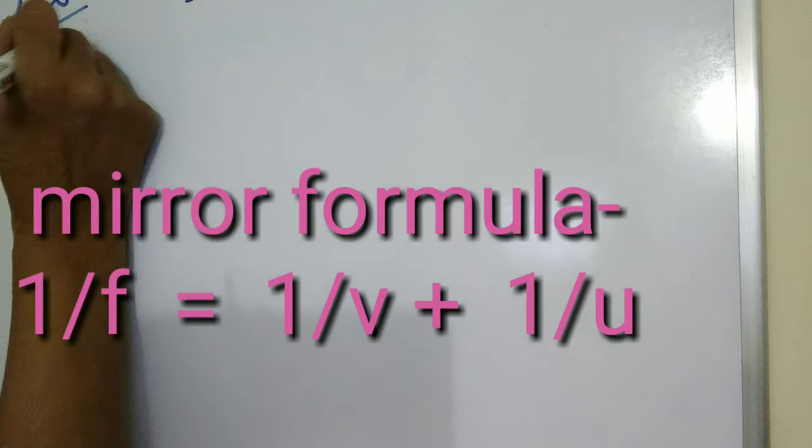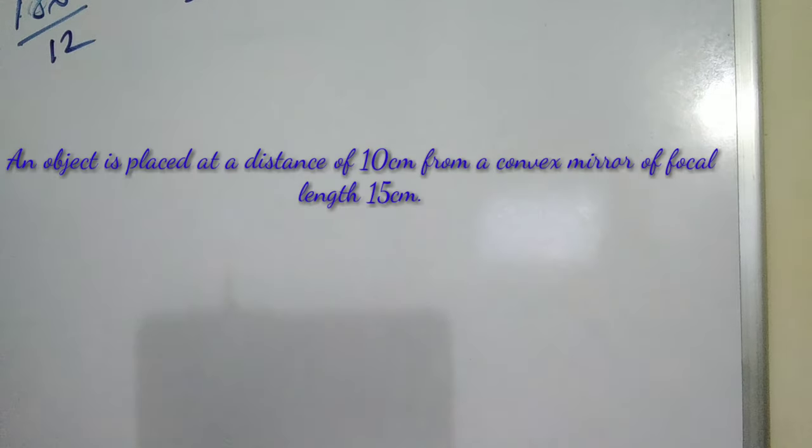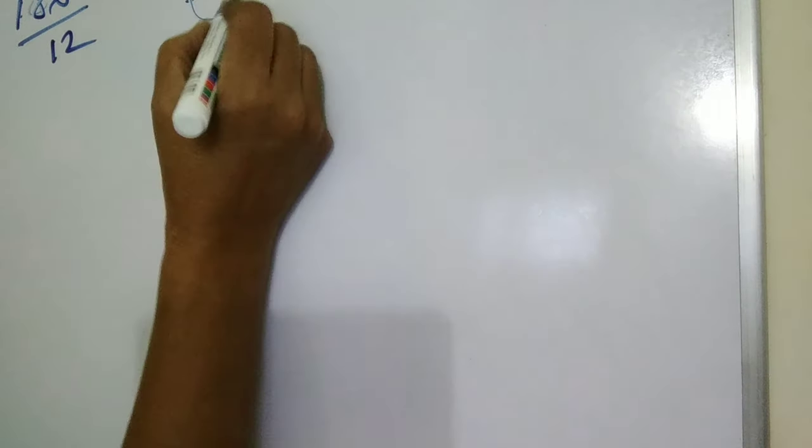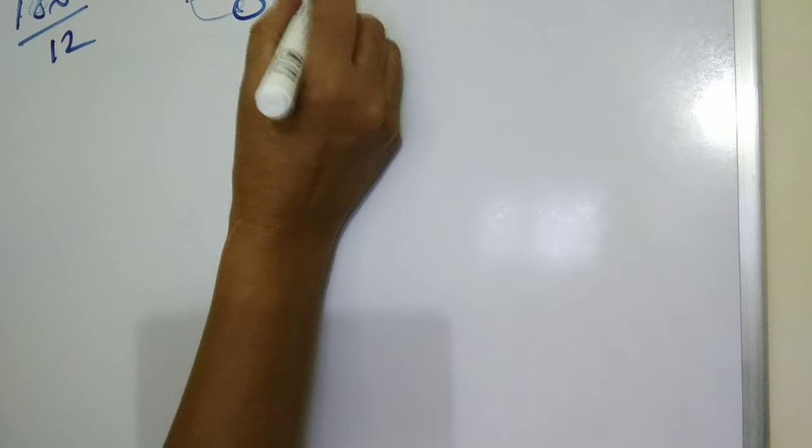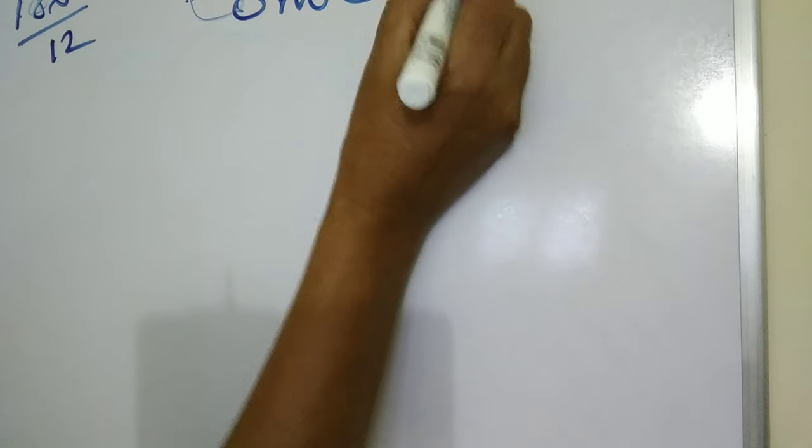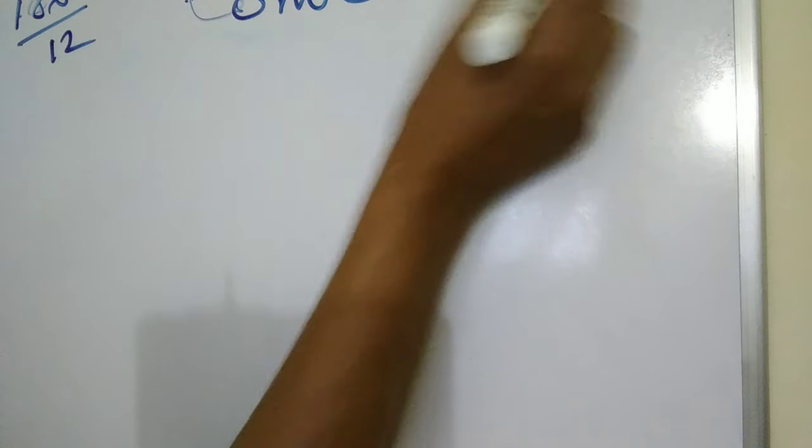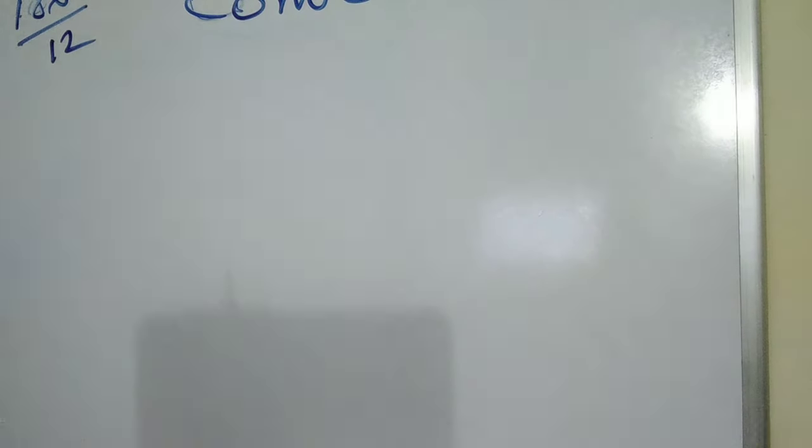The question is: an object is placed at a distance of 10 cm from a convex mirror. The mirror is convex. Object distance is given.